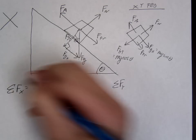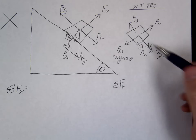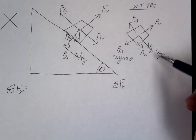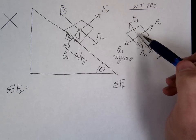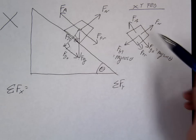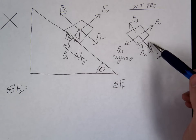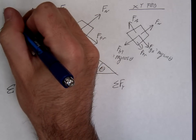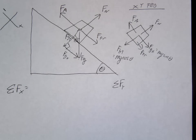So, we're going to sum up our X's. Now, in this, you kind of have a choice what you're going to call positive or negative. Honestly, it doesn't really matter. You could call the direction of motion positive. Or, you could just use our normal convention. To the right is positive. To the left is negative. Either way is okay.